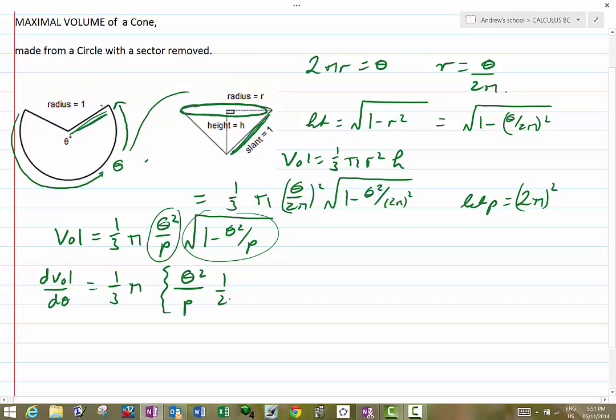So that will be half 1 minus theta squared over p to the minus a half times by minus 2 theta over p, plus the second times by the derivative of the first.